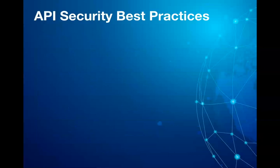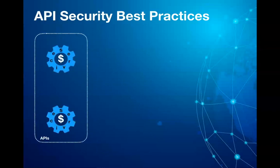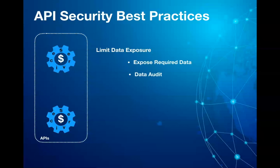So what are some of the best practices you should follow for API security design? I'm sharing my views, but there can be many perspectives on how to make APIs secure and compliant. The first point is to limit data exposure — this includes exposing only the required data, getting the data audited for compliance, not sharing PII data, and using a unique identifier wherever applicable.